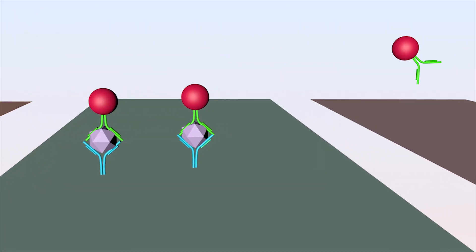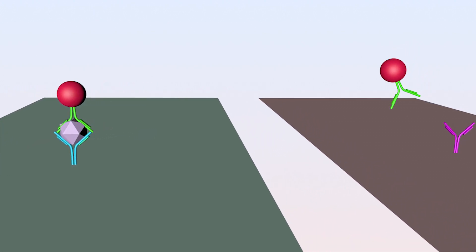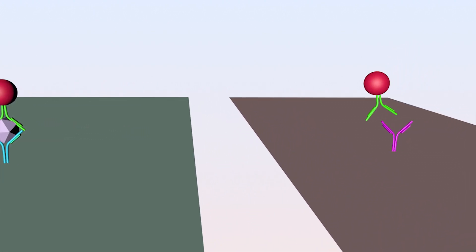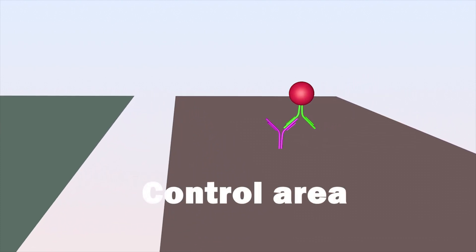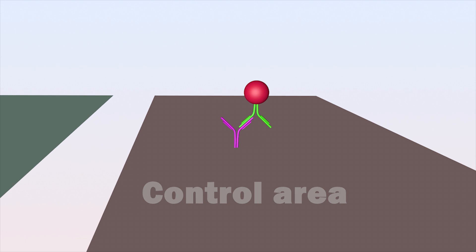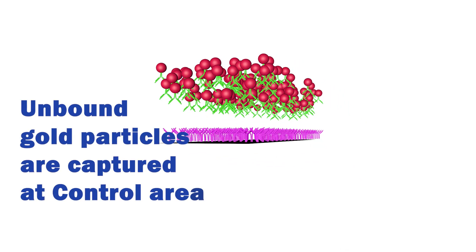The unbound nanoparticles are not captured and continue to move to the next location, namely the control area. The control area is covered with antibodies against the antibodies binding to the gold nanoparticles. The gold nanoparticles are captured here to generate a second visible red line.